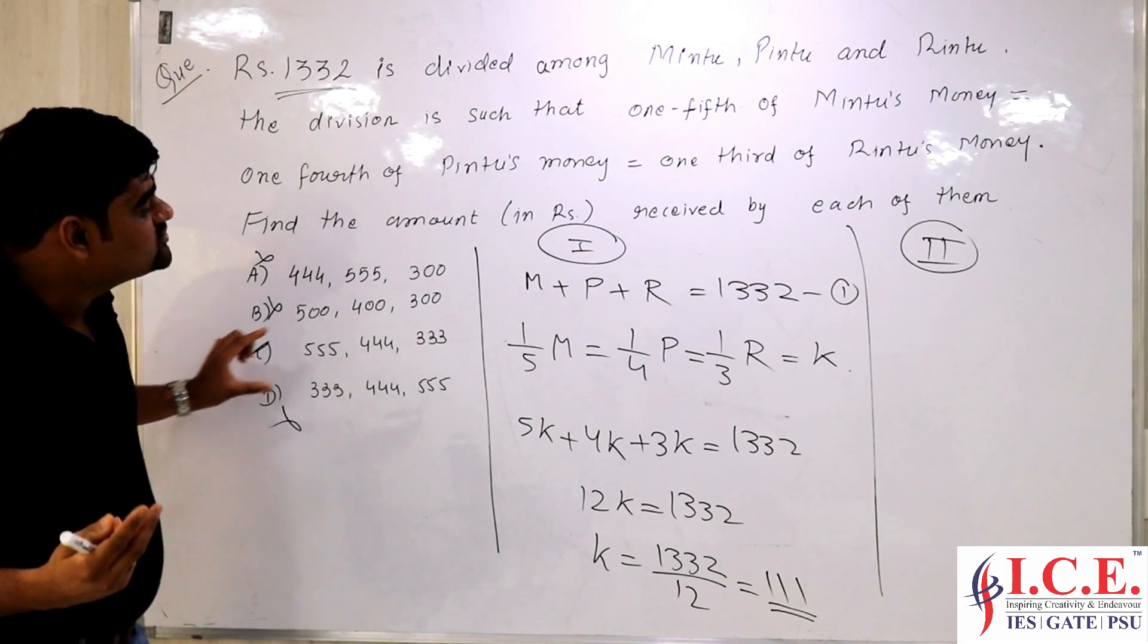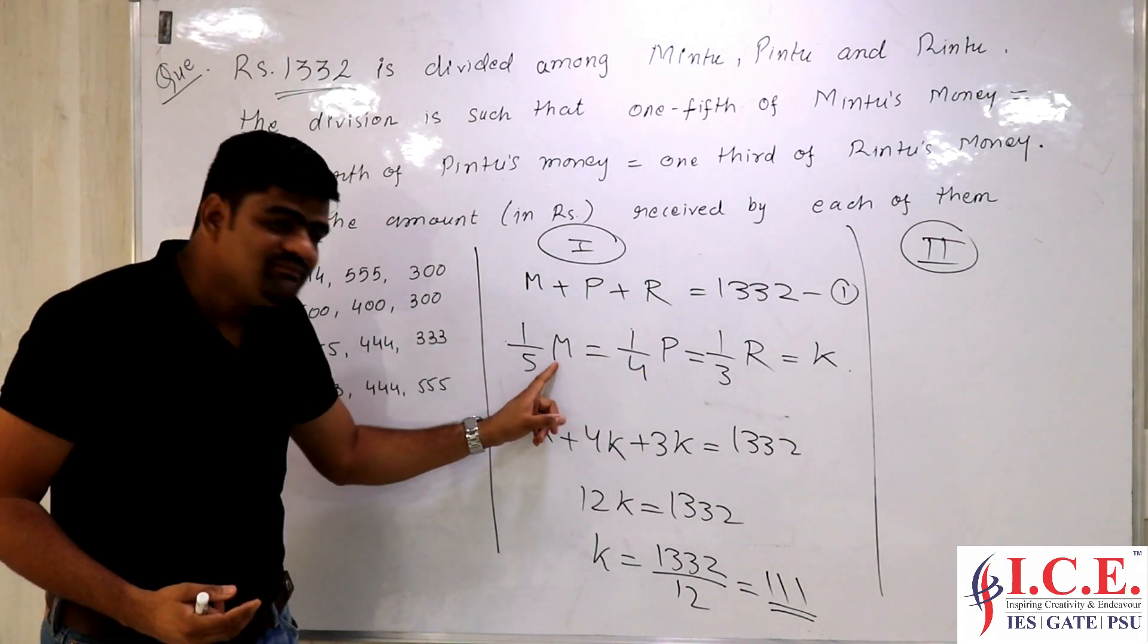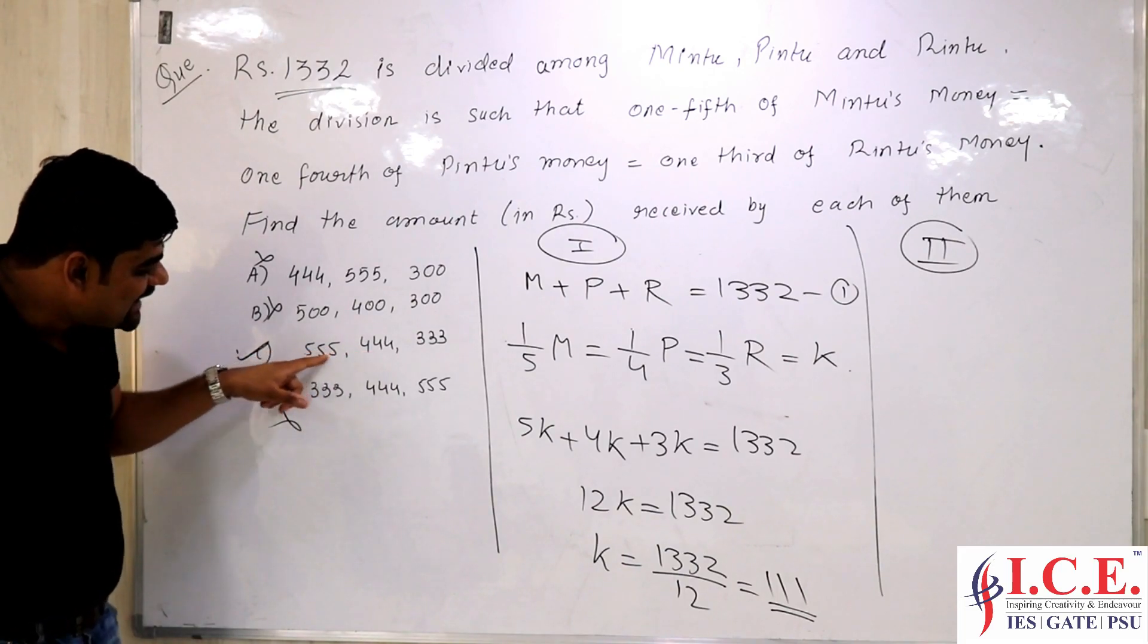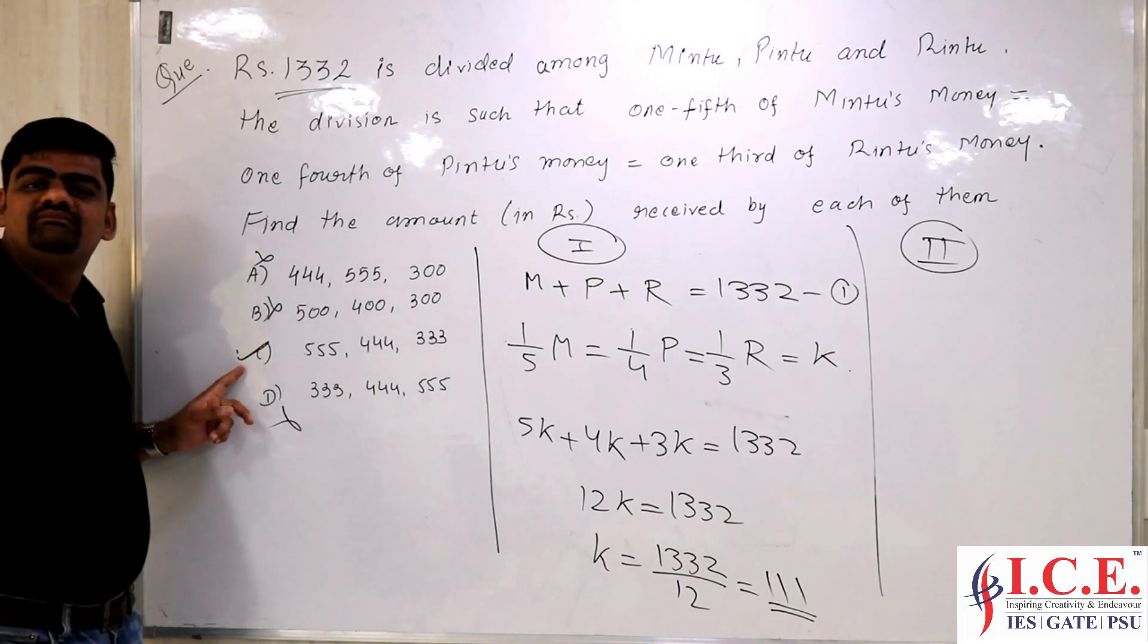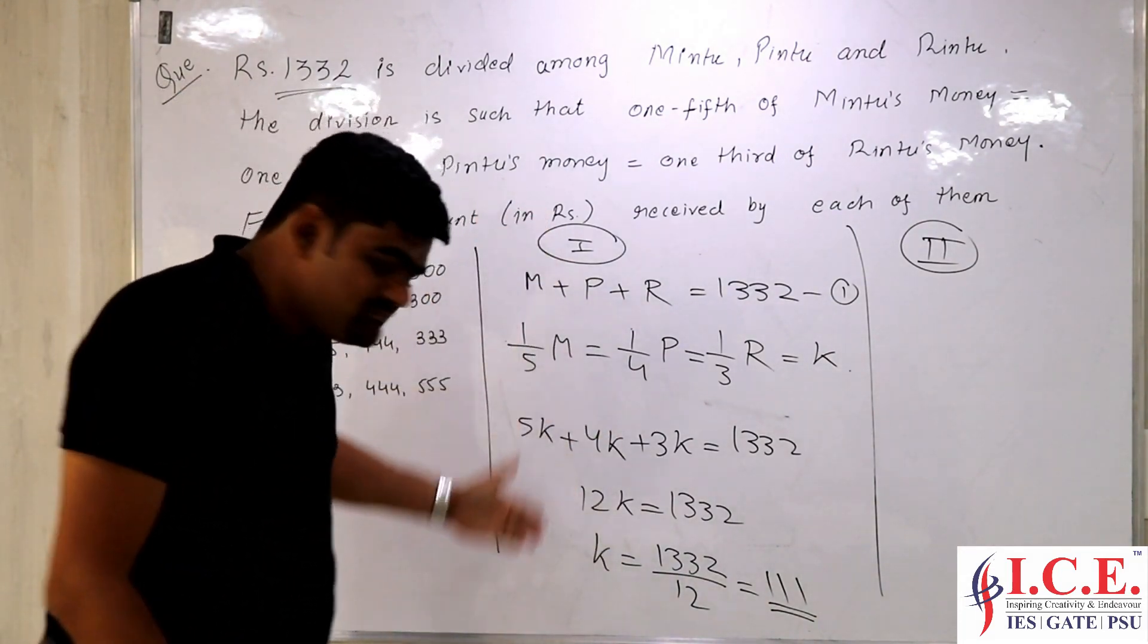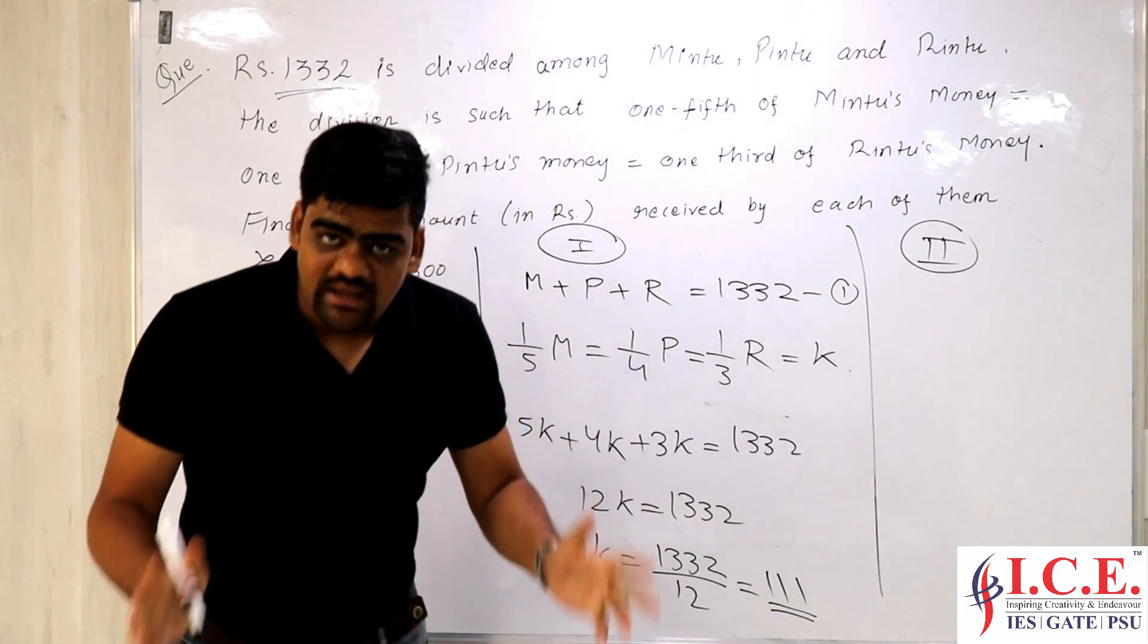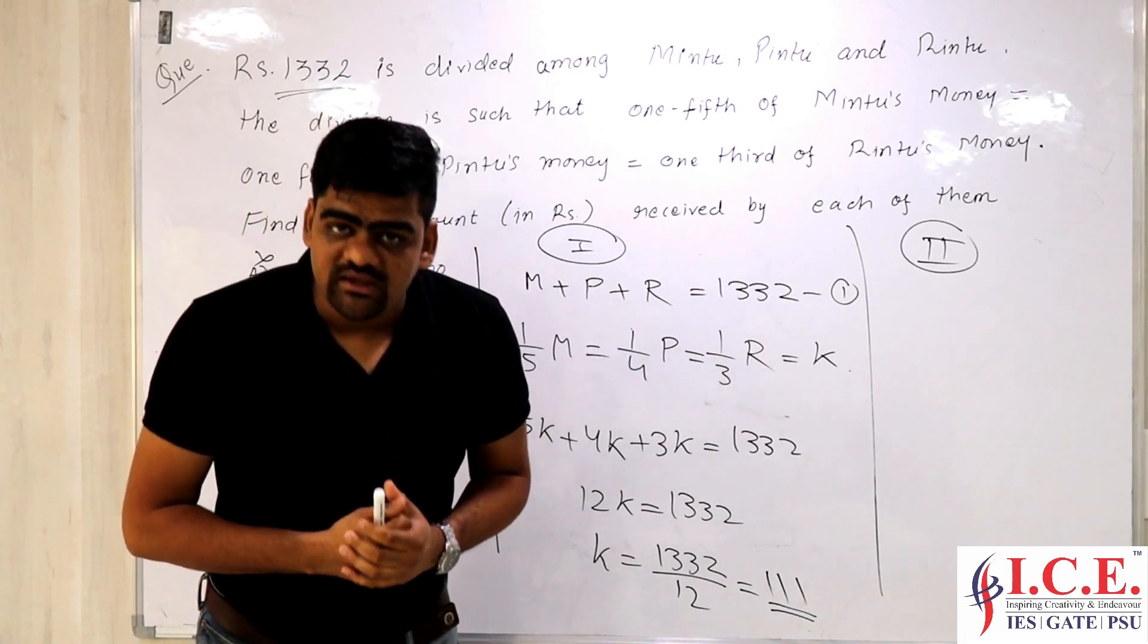Secondly, if you apply logic and you say one-fifth of M is equal to one-fourth of P, that means M is going to be larger value than P. That means you have to compare with these two, M has to be a larger value than P, which is not the case here. So this is not related and that's your answer. You need not even solve this question by this method. Within 3 to 4 seconds, you can get the answer. Getting approach, how to approach differently from others and getting more marks. Thank you.